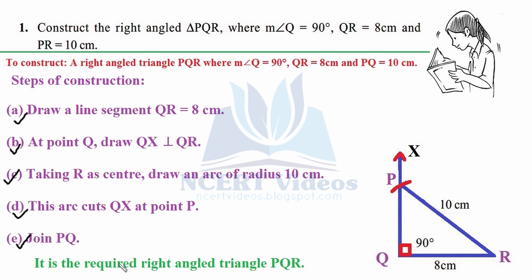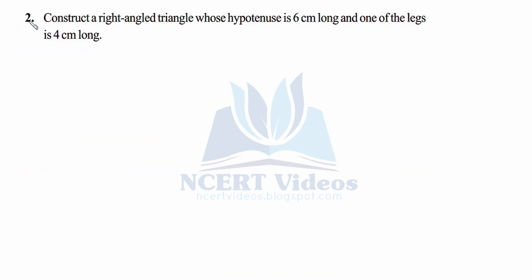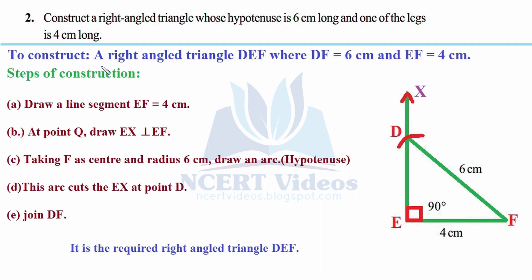That completes the first question. Second: construct a right-angled triangle whose hypotenuse is 6 centimeters long and one of the legs is 4 centimeters long. Again using the same RHS principle, we construct right-angled triangle DEF where DF equals 6 centimeters and EF measures 4 centimeters. The hypotenuse is 6 centimeters — the longest side — and one of the legs is 4 centimeters.